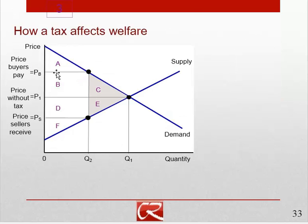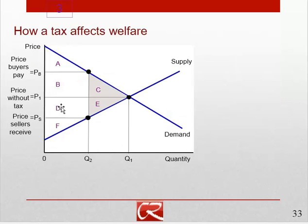What can we say about how a tax affects economic welfare? Without the tax, the equilibrium price would be here at P1. Consumer surplus would be everything above P1 and below the demand curve, so consumer surplus would be A plus B plus C. Producer surplus without the tax would be everything below the price and above the supply curve, so producer surplus would be D plus E plus F.